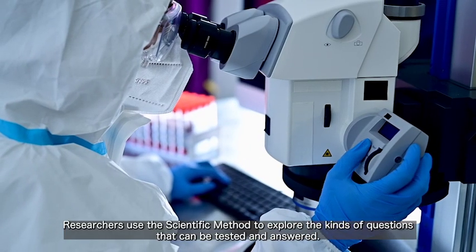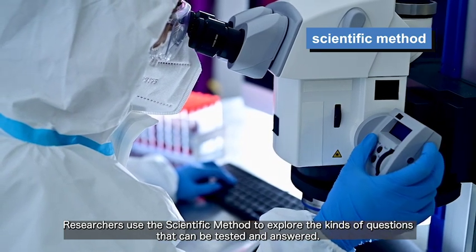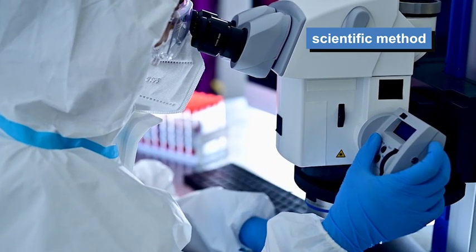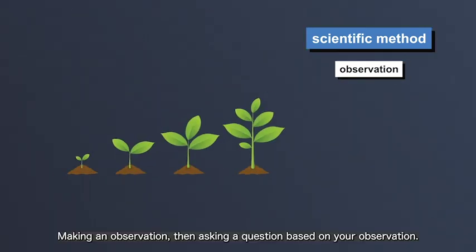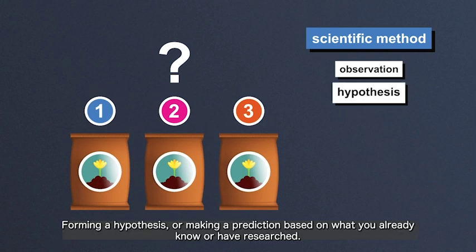Researchers use the scientific method to explore the kinds of questions that can be tested and answered. The steps usually include making an observation, then asking a question based on your observation, and forming a hypothesis or making a prediction based on what you already know or have researched.